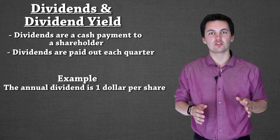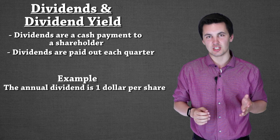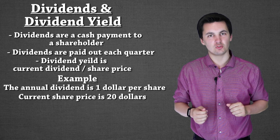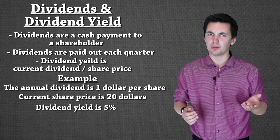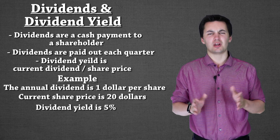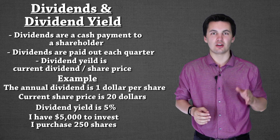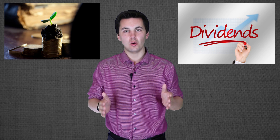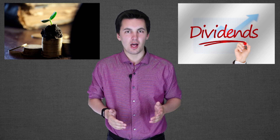When dealing with dividends, it's important to understand the dividend yield. If the dividend is $1 and the current share price is $20, to find the dividend yield you divide the dividend ($1) by the share price ($20), which gives you 5%. That's how much money you'll be getting back on your total investment at the end of a year. So if you have $5,000 and purchase 250 shares, at a 5% dividend yield you'll be getting $250 a year back. And if the share price goes up, you can always sell and make money that way as well.